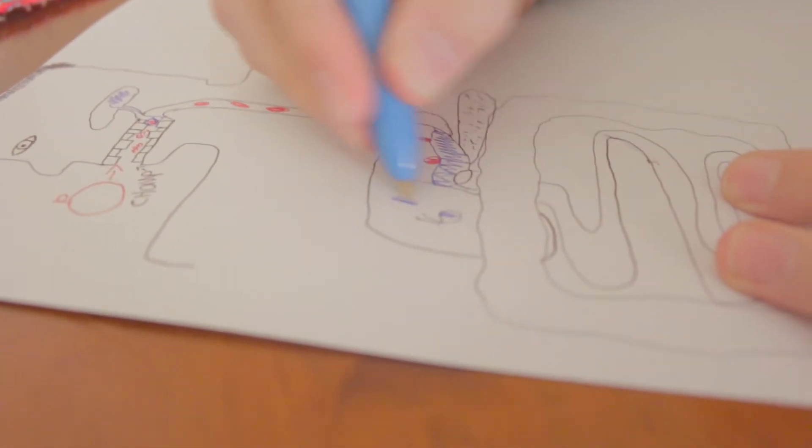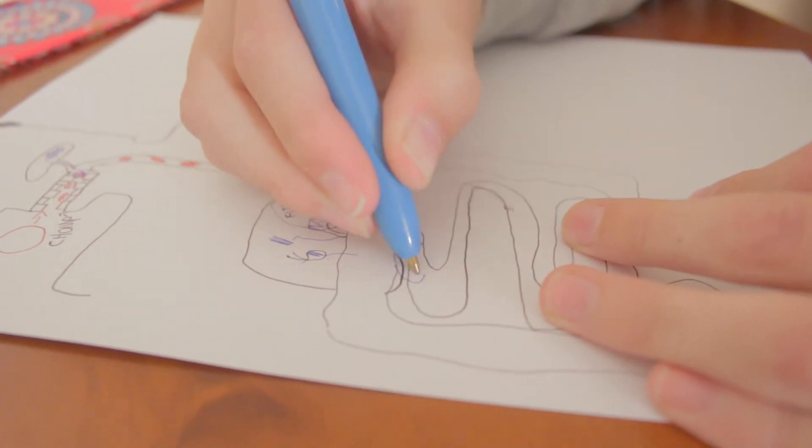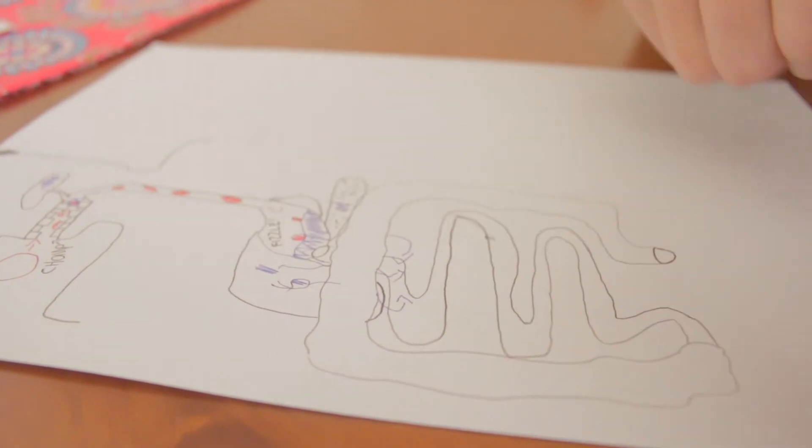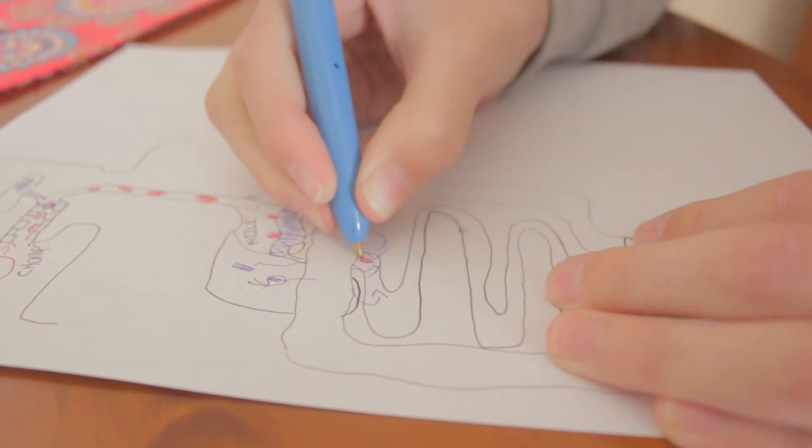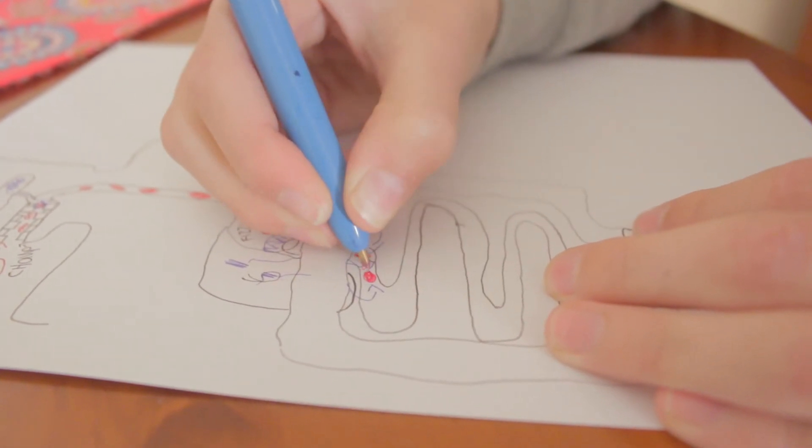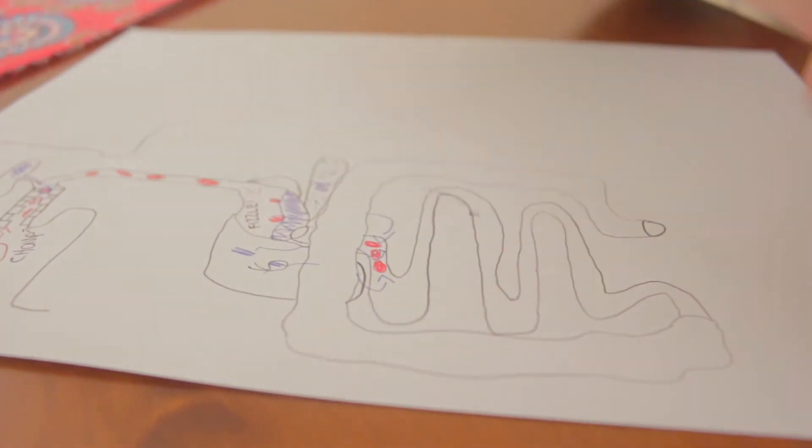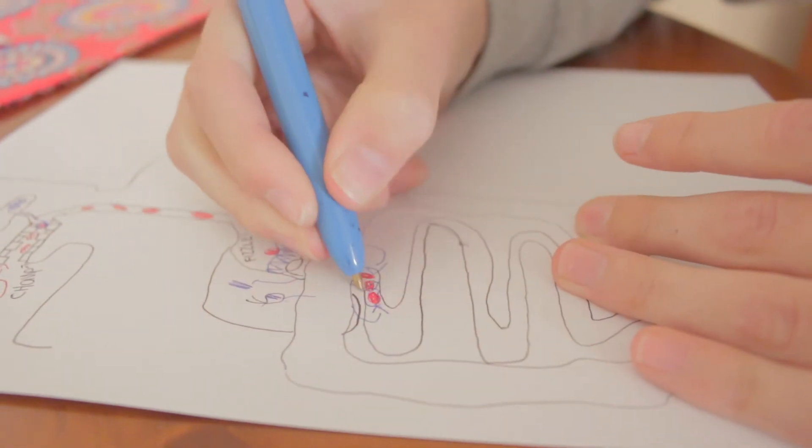Into the lymphatic system which then drains into the bloodstream through the subclavian vein. After this, the fatty acids may be oxidized for energy in the muscle cells or stored in the fatty adipose cells.